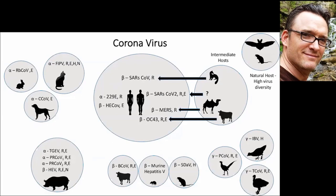You can see we have alpha and beta coronaviruses in pigs, and alpha coronaviruses in companion animals and rabbits. The other circles around the slide are examples of other coronaviruses present in some of these other animals. These viruses are present in the environment and in other animals that we interact with.